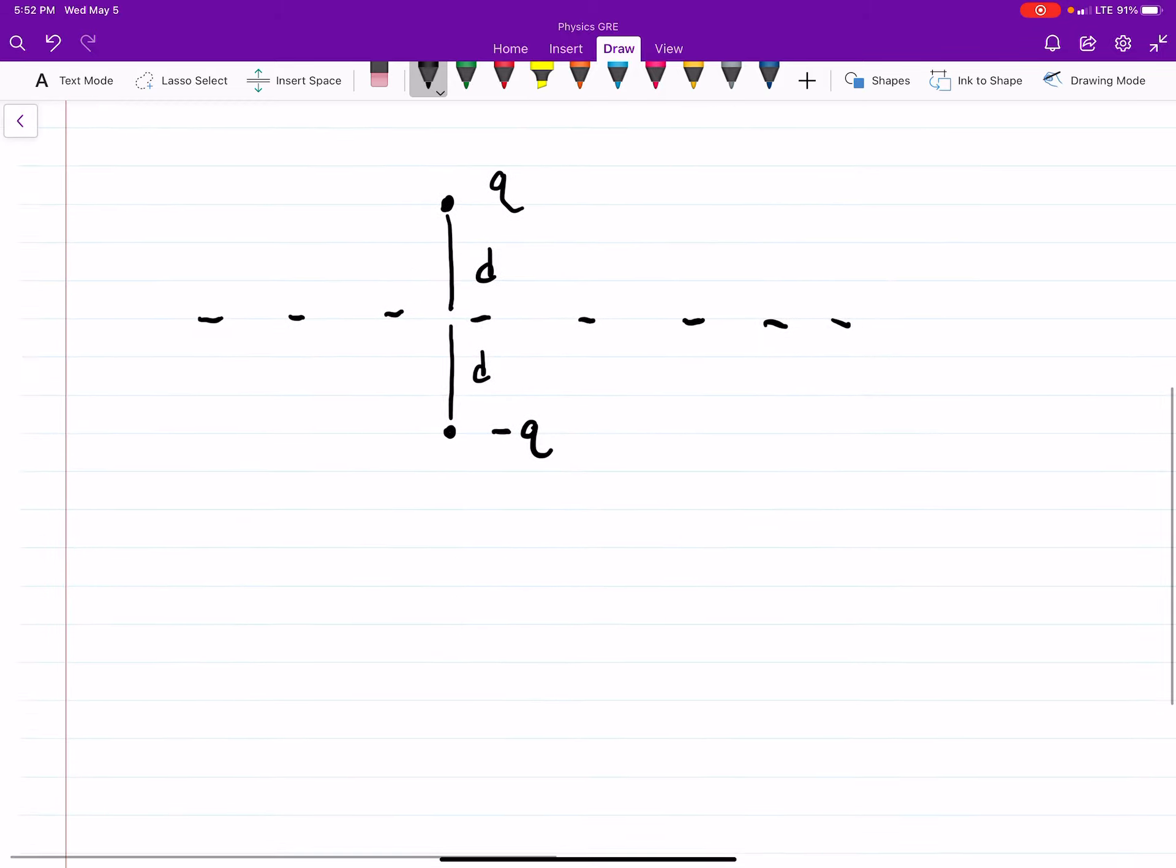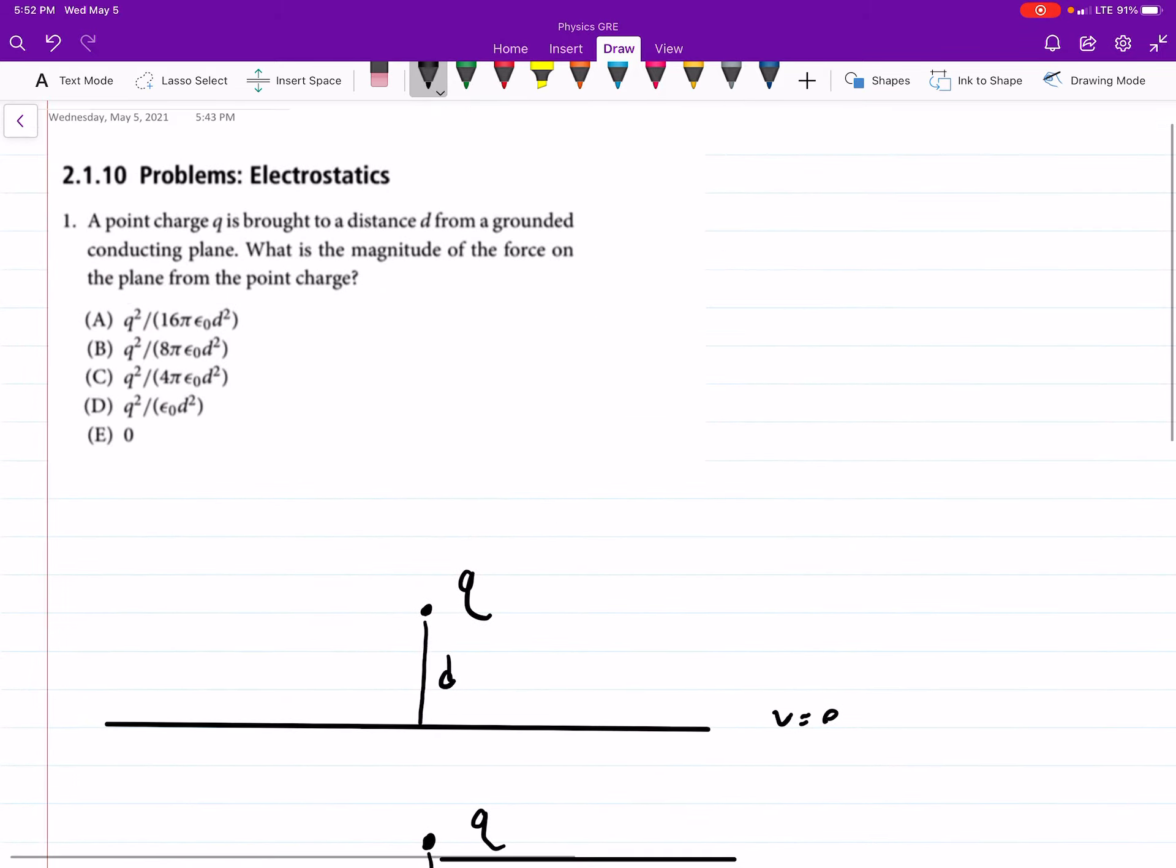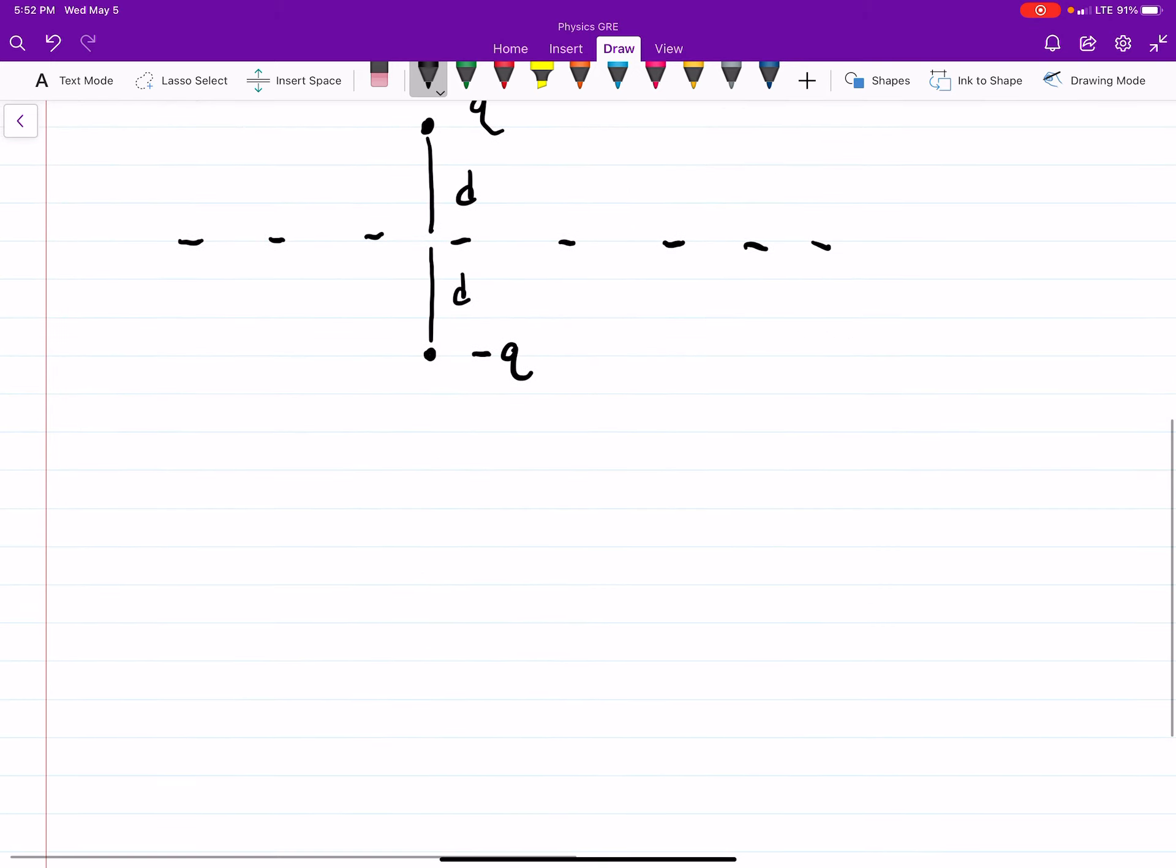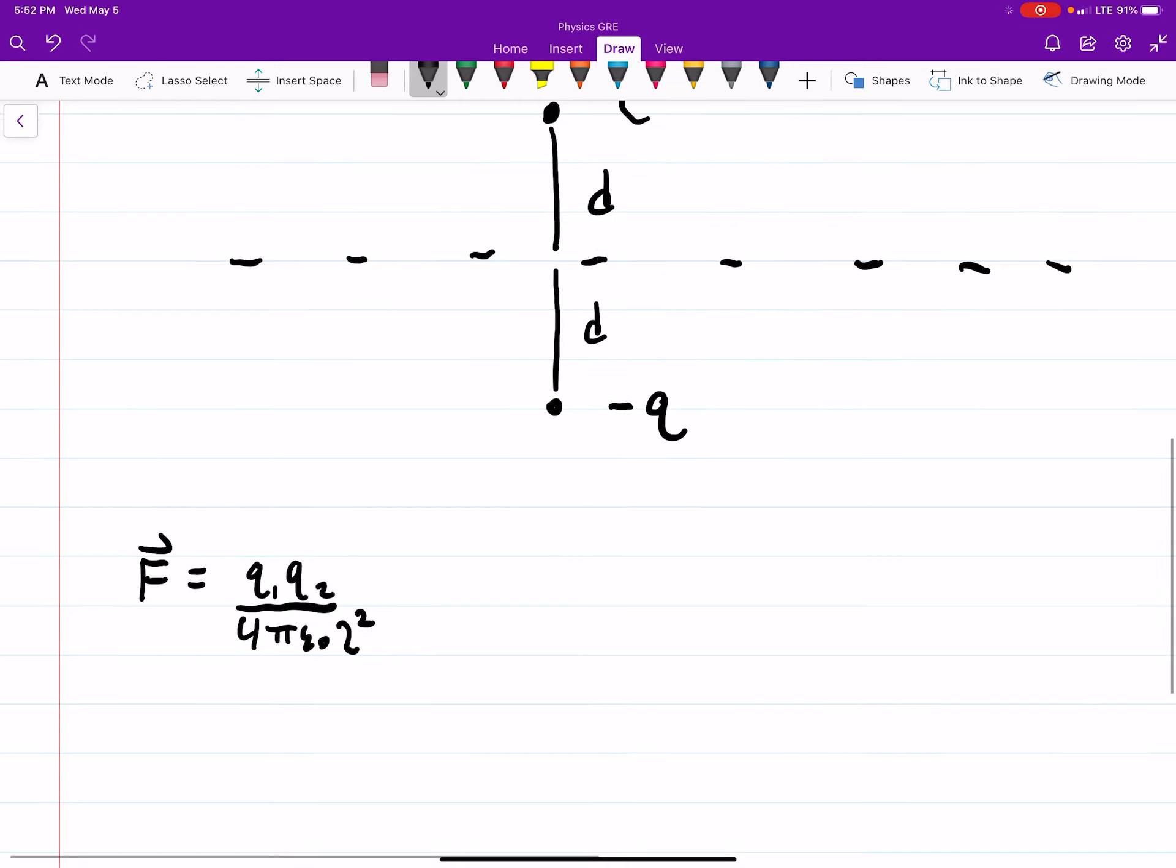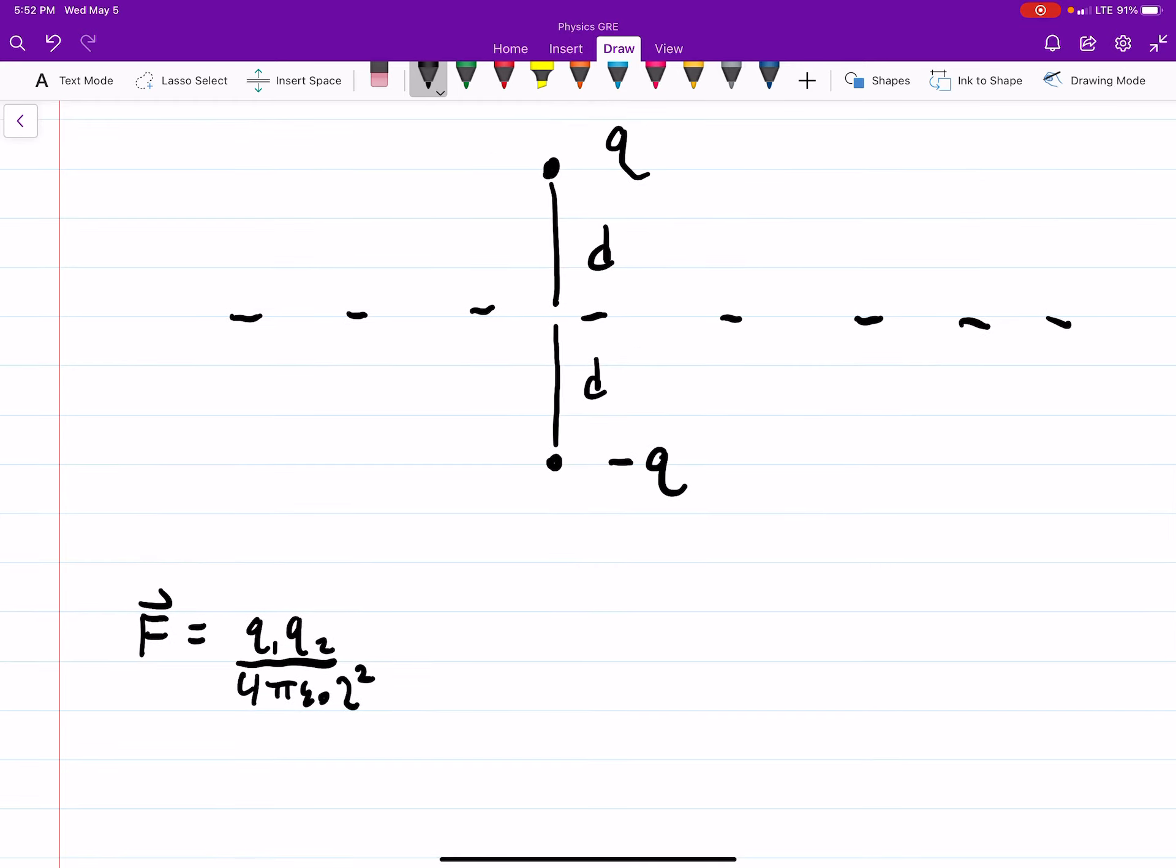And then from there, we can just find the force. And they're not worried about the direction, they just want the magnitude. And the force is q1 times q2 over 4 pi epsilon naught, I'll call it script r squared. Where this is the distance between the two points that we're interested in.